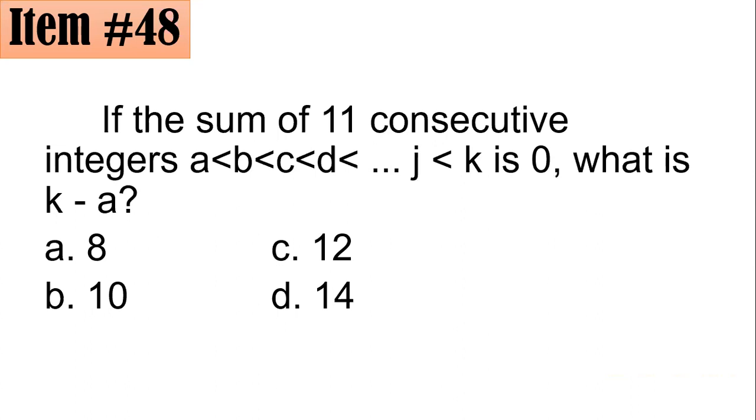Item 48. If the sum of 11 consecutive integers a, b, c, d, and so on until k is 0, what is k minus a? Is it 8, 10, 12, or 14? From here, we could actually see that a is the smallest and k is the largest, and they are all consecutive integers, in this order. We could say that k minus a, since until k, there are 11 of them, and their sum is 0, there is actually, we could see that f is the middle number. And thus, it follows that since their sum is 0, it follows that the middle number should be 0.